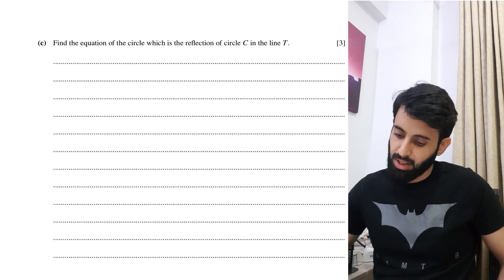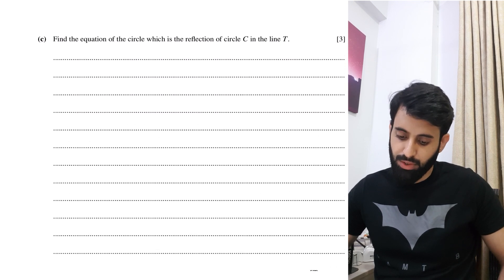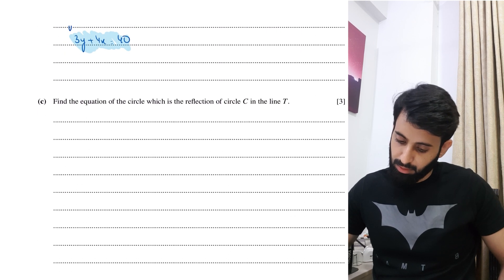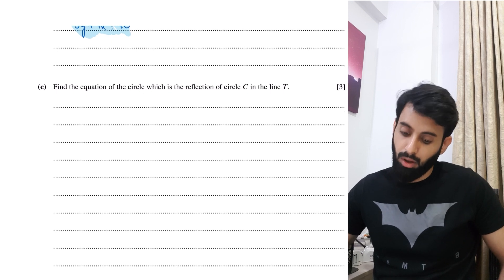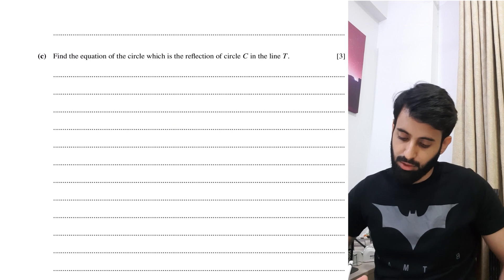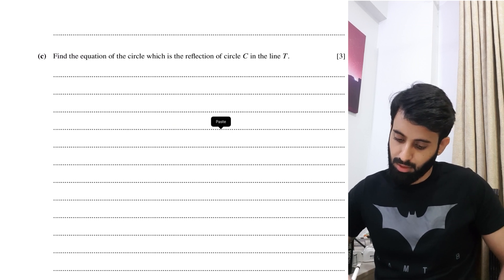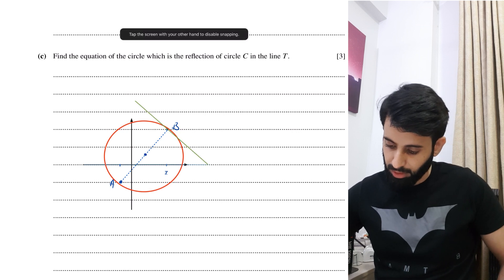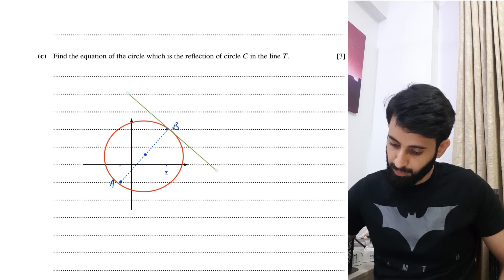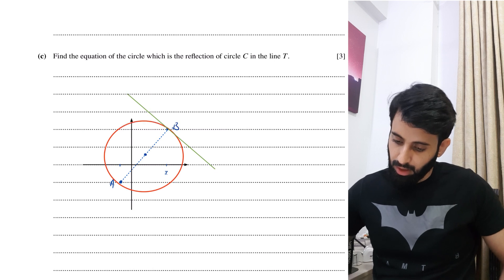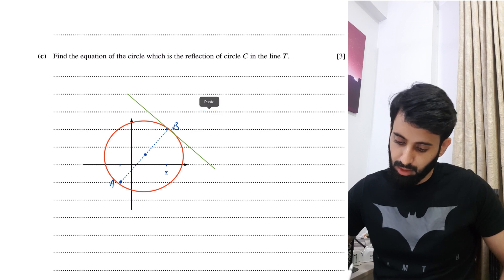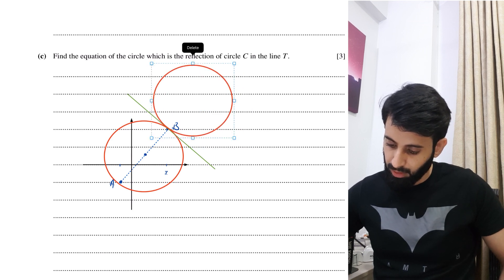Part C asks us to find the equation of the circle which is the reflection of circle C in the line D. Line D is the tangent line we just found in green. We need to find the equation of the circle reflected along this line.